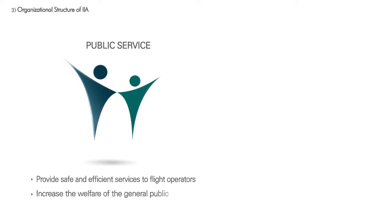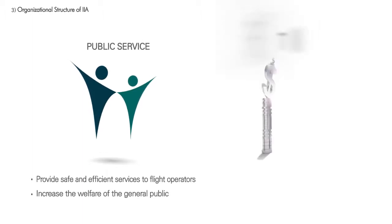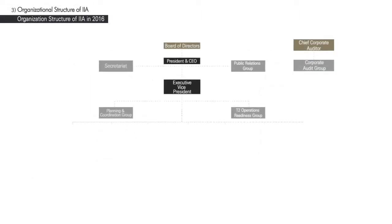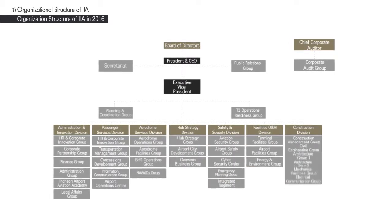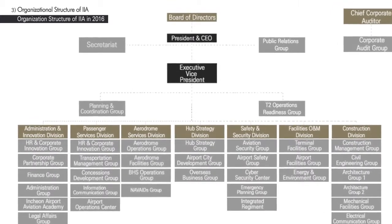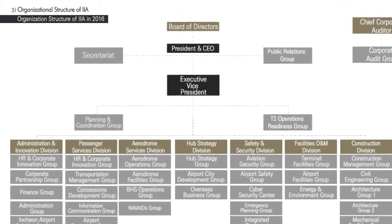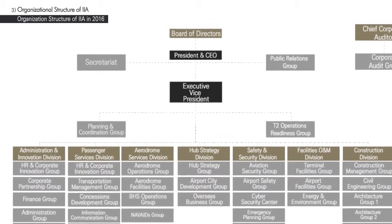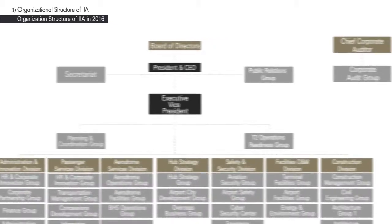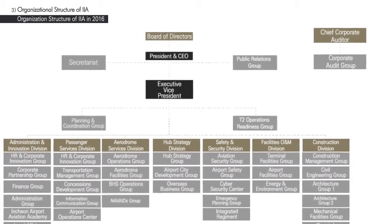As a government-owned public corporation, it is required of Incheon International Airport to provide safe and efficient services to flight operators at the airport, ultimately increasing the welfare of the general public. At the same time, as a corporation, Incheon International Airport must maximize revenue and profit. To serve both purposes of enhancing the welfare of the general public and maximizing profit, Incheon International Airport's structure is organized as shown in this figure. Groups are organized under relevant divisions, president or vice president, in order to provide a safe and efficient flight operation environment and maximize profit. Other specific operational tasks are performed by specialized contracted companies. As a public corporation, a chief corporate auditor and a corporate audit group is organized separately.